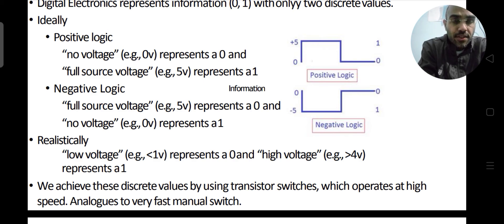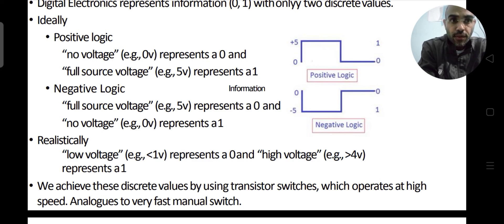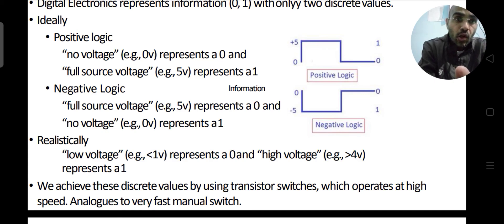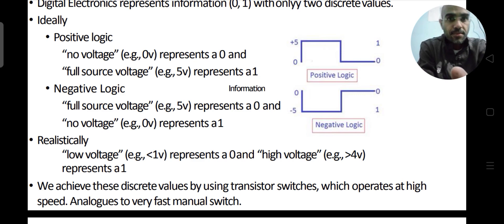Whereas if you define a higher range, let's say from 4V to 5V, then any voltage falling in this range of 4 to 5V will be rounded to 1. So this signal cannot take all values between 0 and 1V on the lower side, or between 4 to 5V on the higher side, but will always be rounded to the nearest 0 or 1. Such a signal becomes your digital signal, and this representation is your digital representation.